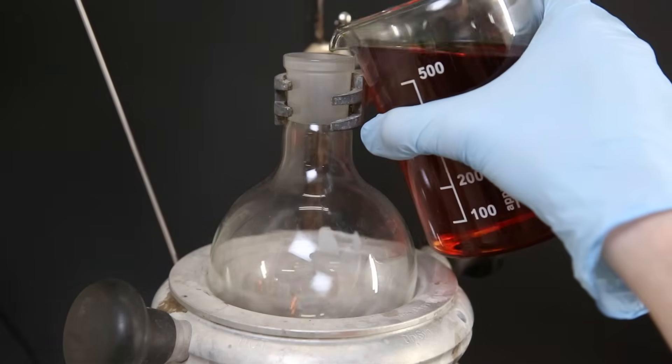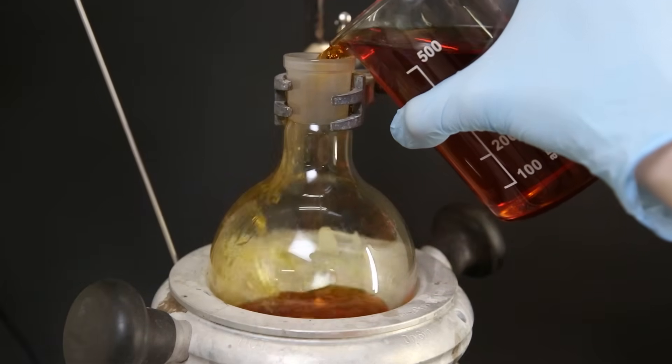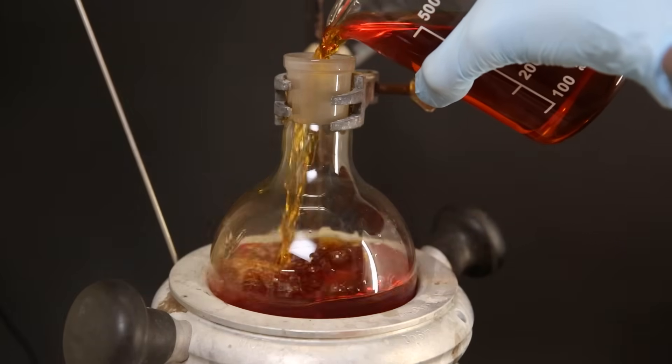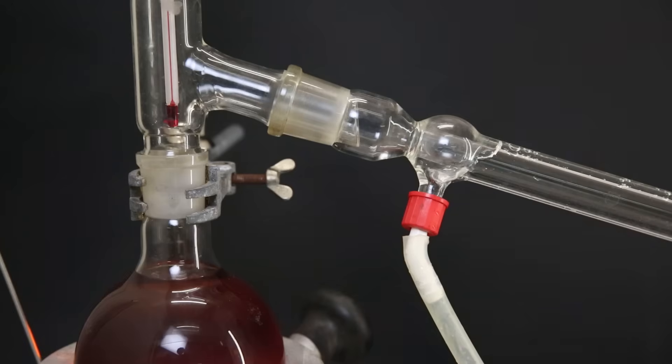So after everything has filtered through, I am left with a clear orange-red solution. I pour this solution into a flask and set it up for distillation. This way I can simply recover most of my DCM.